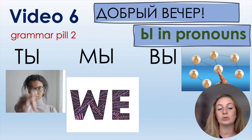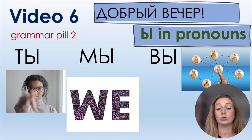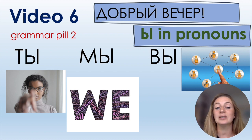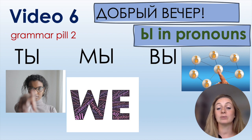Another grammar element, also related to the letter Ы: I want to give you more pronouns. You already know Я, ОН, ОНА. Now I want to give you ТЫ — which means 'you' (singular). Then МЫ — 'we'. And ВЫ — 'you' plural, meaning many of you. So: ТЫ, МЫ, ВЫ.